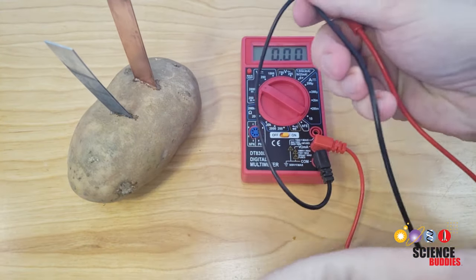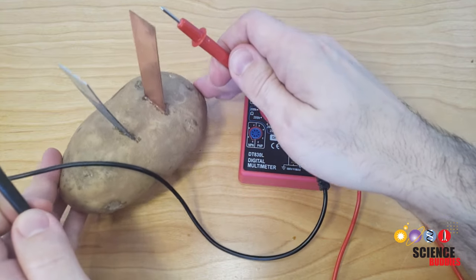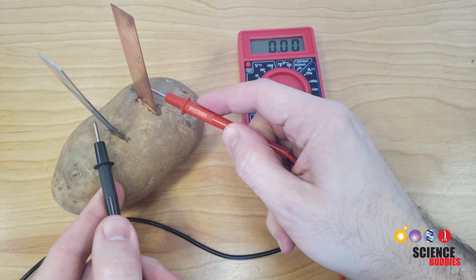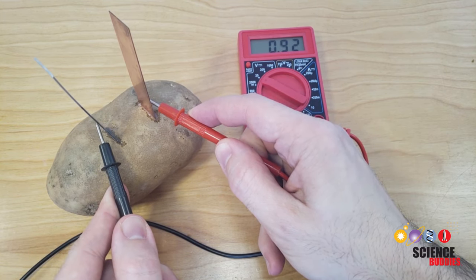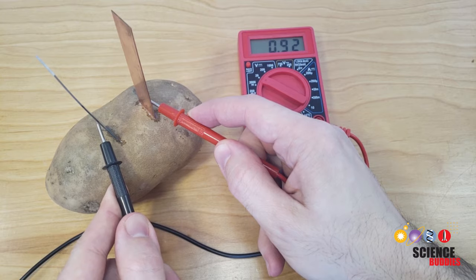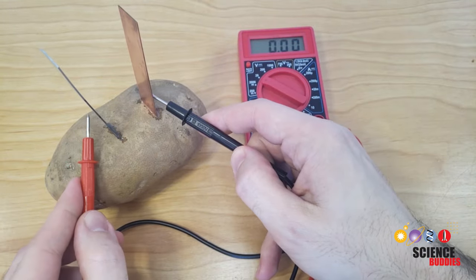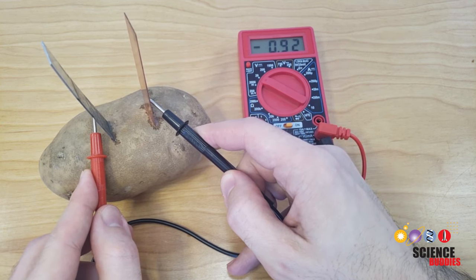Then take your probes and touch the red or positive probe to the copper, which again is the positive side of our battery, and the black or negative probe to the zinc electrode, and you will see the voltage reading on your battery screen. In this case, I'm getting about 0.9 volts. Now, it's not a huge deal if you get those reversed, you're not going to break anything, but you will see a negative sign on your voltage reading since you have positive and negative backwards.